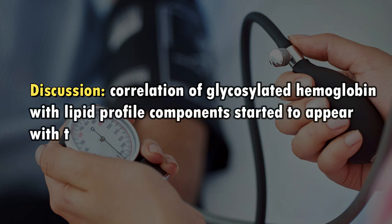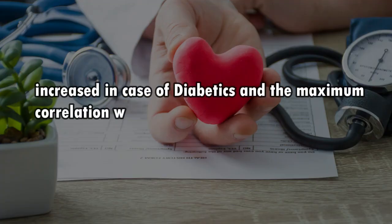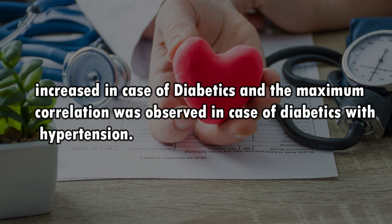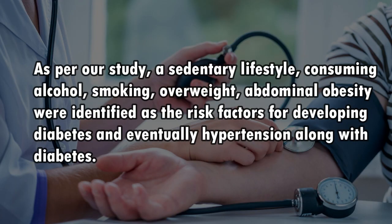Discussion. Correlation of glycosylated hemoglobin with lipid profile components started to appear with the onset of the pre-diabetes phase itself, increased in case of diabetics, and the maximum correlation was observed in case of diabetics with hypertension. As per our study, a sedentary lifestyle, consuming alcohol, smoking, overweight, and abdominal obesity were identified as the risk factors for developing diabetes and eventually hypertension along with diabetes.